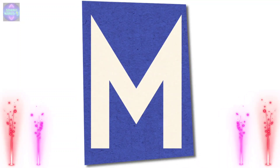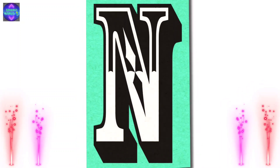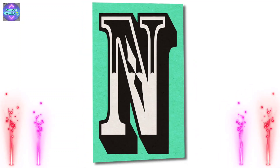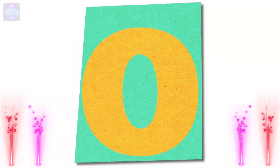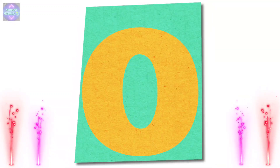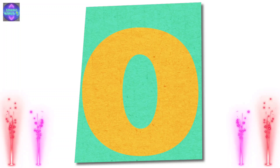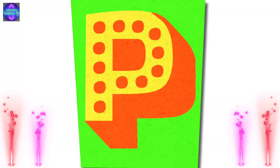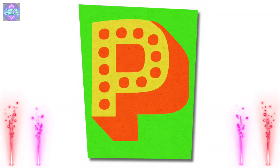M. M for monkey. N. N for nest. O. O for orange. P. P for parrot.